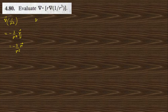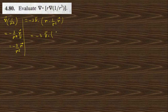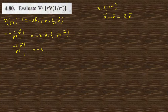So the divergence of R into this is nothing but: take minus 3 as common, giving minus 3 by R to the power 5 into R vector. This will be nothing but minus 3 times divergence of (1/R⁴) · R vector. Using the identity formula: grad φ · A plus φ times divergence of A, this can be written as gradient of (1/R⁴) dot R, plus (1/R⁴) times divergence of R.